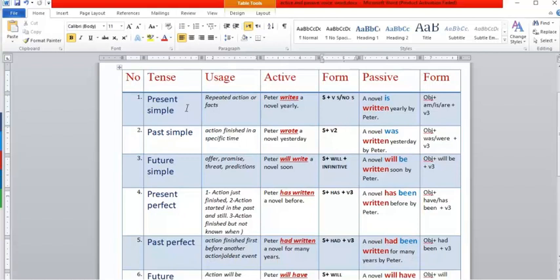Number one: present tense. We use it especially with repeated actions or facts. Like 'Peter writes a novel yearly'—this is his habit. The form of this verb tense is subject plus verb with s or no s. Then you complete with the object.